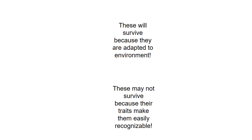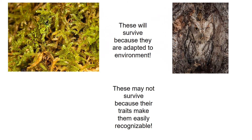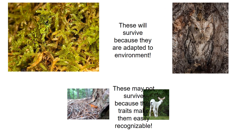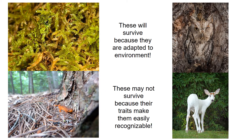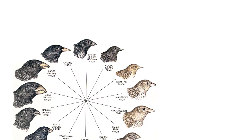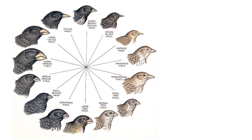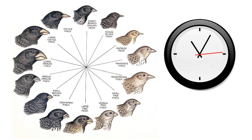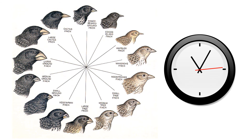In many animal environments, survival depends on the organism's traits, so natural selection can play a big role in how future generations appear. This is why evolution can be observed gradually, sporadically, or often unexpectedly in species like the Galapagos Island finches.